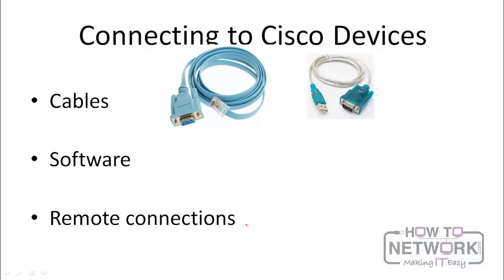These cables come with all Cisco devices. This cable is called a console cable, and the console cable is pretty much a rollover cable. It has a DB9 serial port at the other end. It's called a rollover cable because the cables inside are rolled over across.